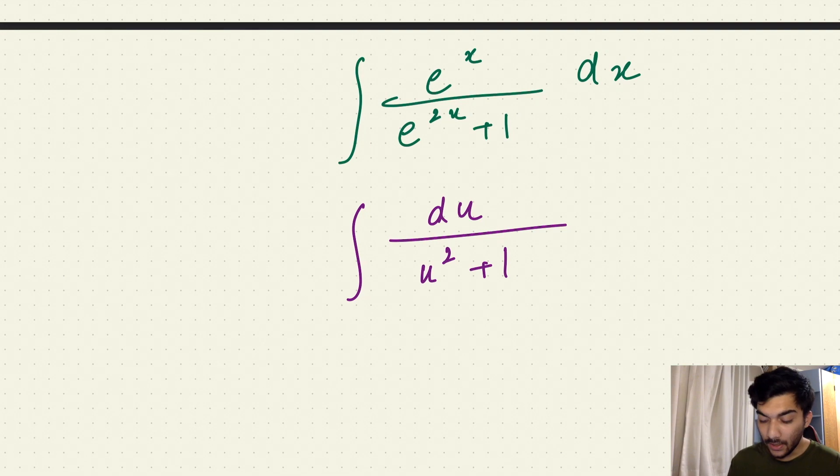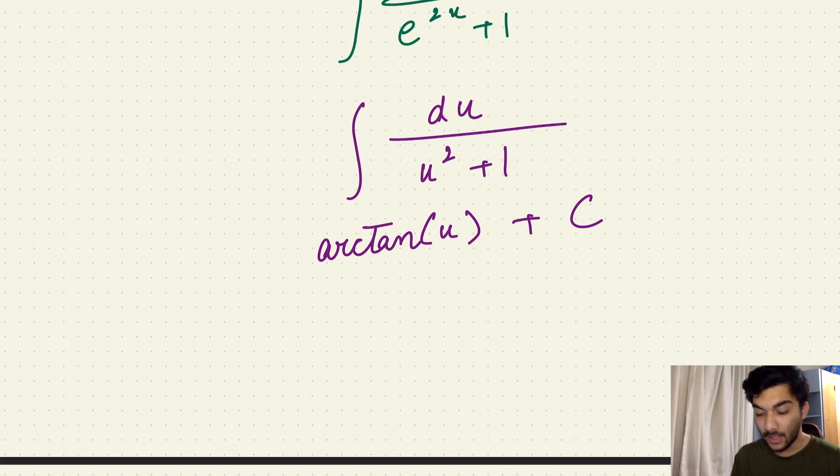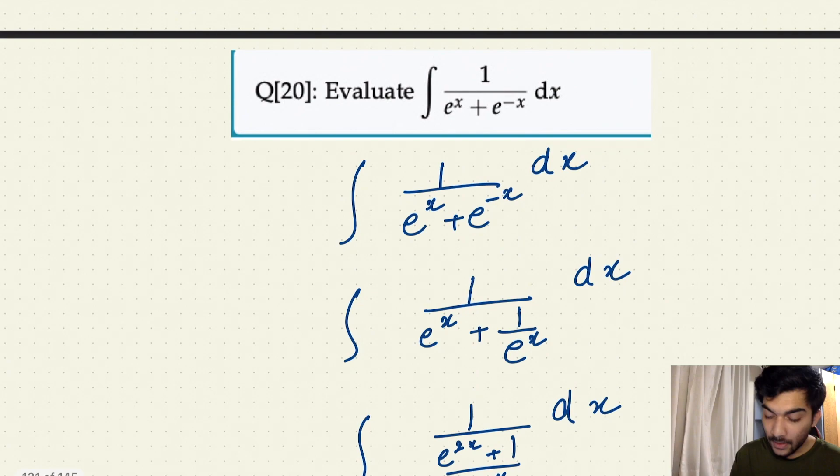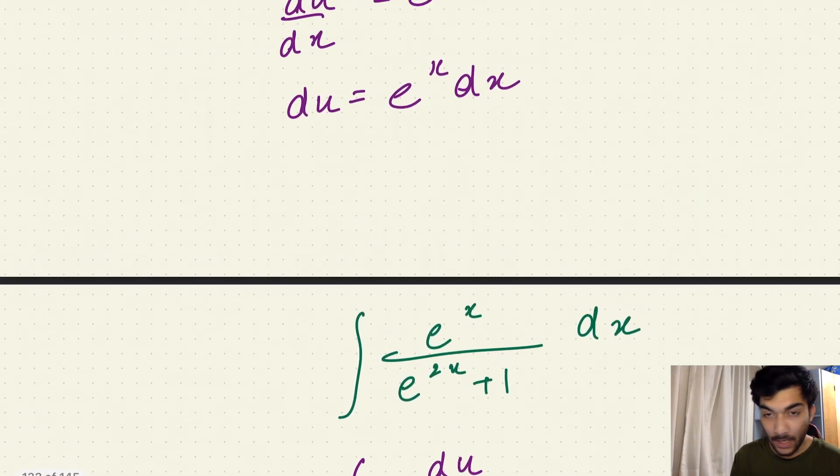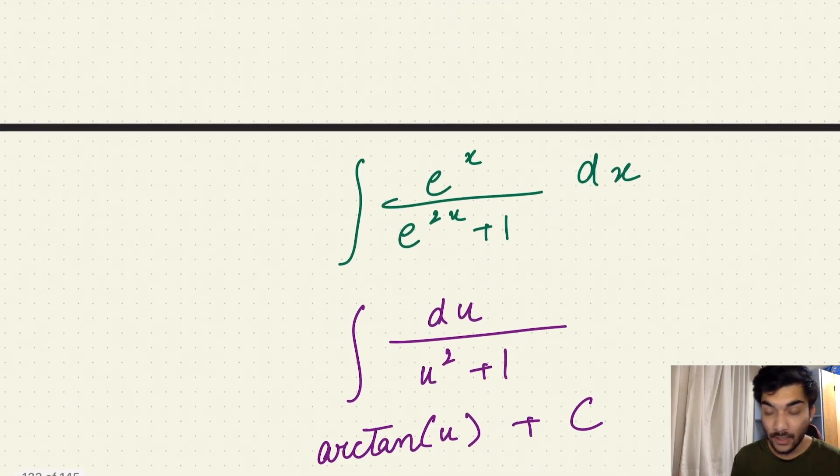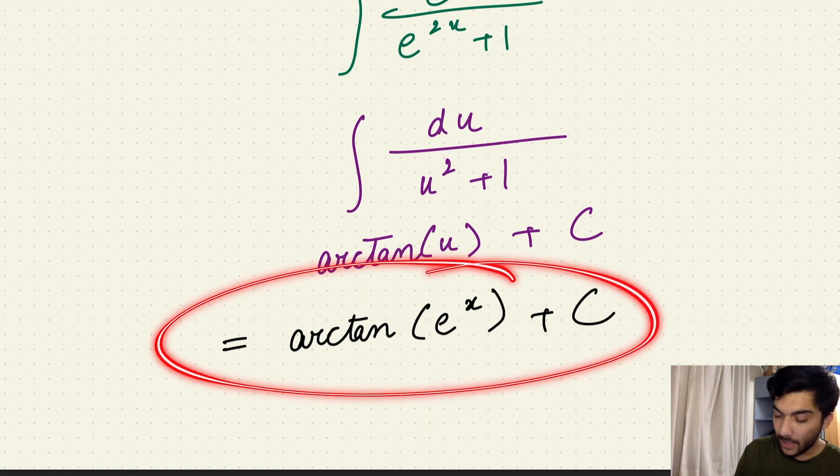And you already know the integral of 1/(u^2 + 1), which is basically arctan(u) plus constant of integration because it's an indefinite integral. And now since your final answer should be in terms of x, you'll have to substitute the value of u again back into the x form. So since your value of u in this case was e^x, your final answer would be arctan(e^x) + C. So this would be your final answer.